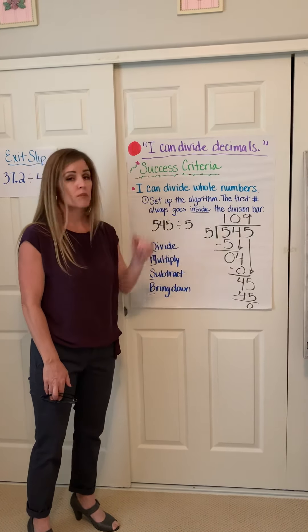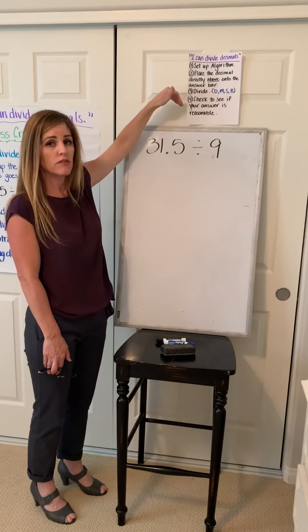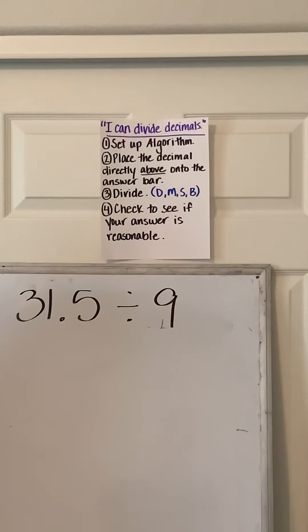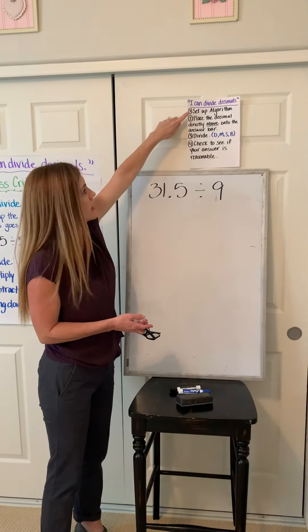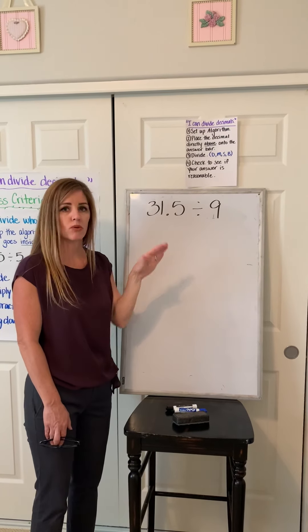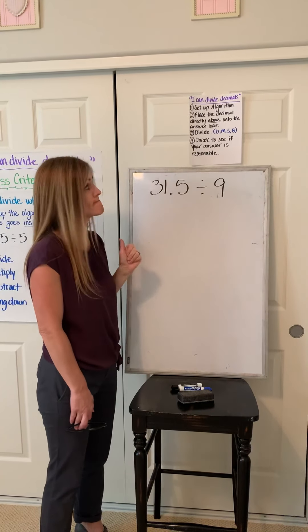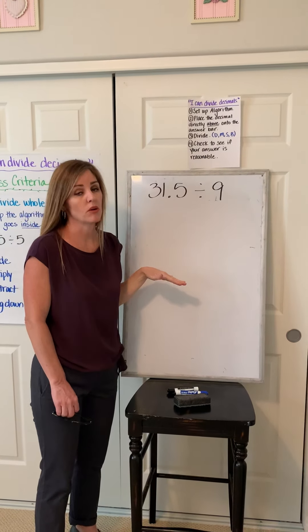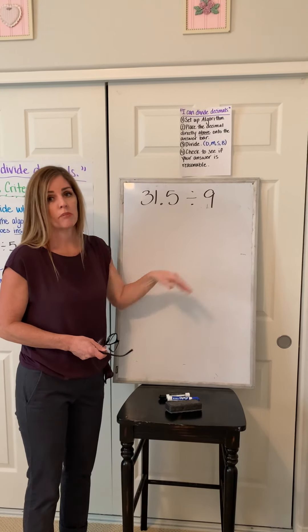We're going to come over to our steps for today's learning target: I can divide decimals. I'm going to ask you to hit pause and copy them down in your notebook, then I'll take you through and explain and we'll do some practice. The steps are: set up the algorithm, placing the numbers inside the house. Second, place that decimal before we start to divide — it's different than when we multiply decimals. When we multiply, we ignored the decimal and placed it last. Now it's the opposite: we place the decimal before we divide, and then we're done with it. Then we go through the division — dad, mother, sister, brother. Finally, we check to see if our answer is reasonable, which is very important because there are so many steps where we can make an error. If we place that decimal in the incorrect spot, checking for reasonableness will help us know we made an error.